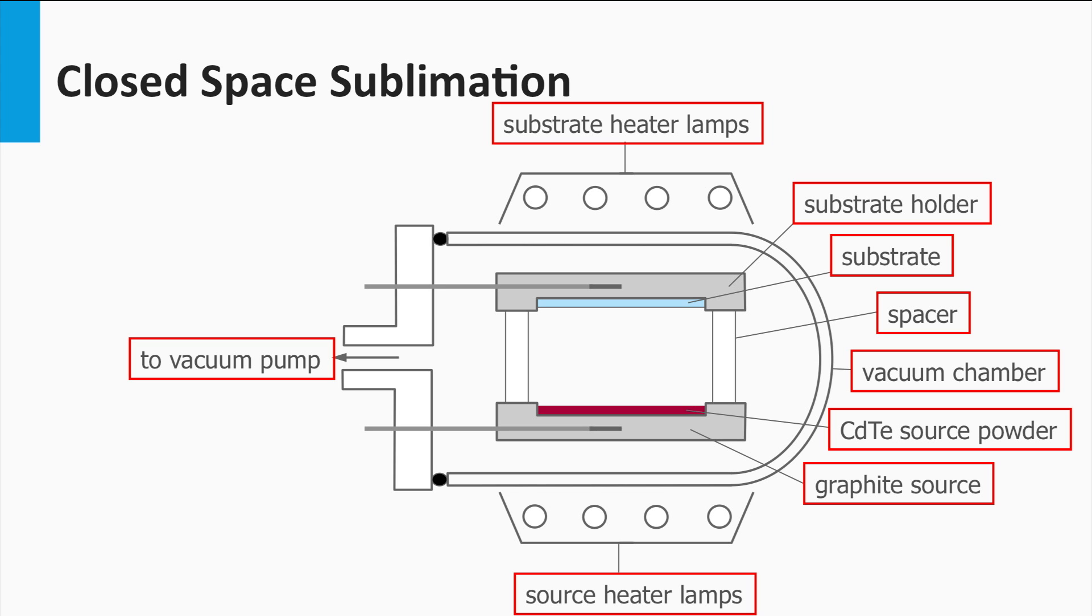The source is at a higher temperature as the substrate and induces a driving force on the precursors, which are deposited on the substrate. The bulk P-type cadmium telluride is formed.